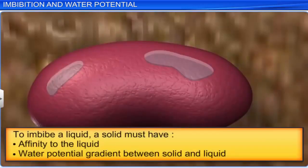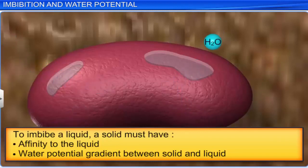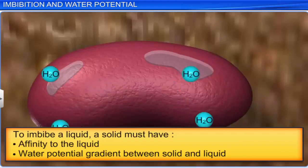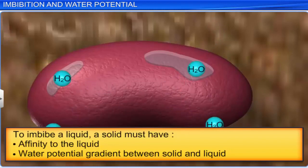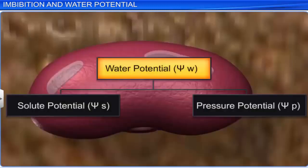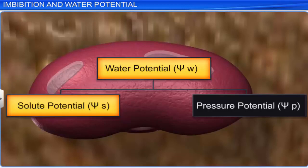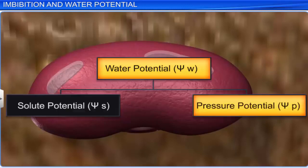For any solid to imbibe a liquid, it must have an affinity for the liquid. Also, the water potential gradient between the absorbent — that is the solid — and the liquid imbibed, is essential for imbibition. The water potential gradient comprises two main components: solute potential and pressure potential.